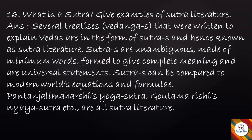Question: What is a Sutra? Give examples of Sutra literature. Answer: Several treatises, known as Vedangas, written to explain the Vedas are in the form of Sutras and hence known as Sutra literature. Sutras are unambiguous, made of minimum words, formed to give complete meaning, and are universal statements. Sutras can be compared to modern equations and formulas. Examples include Patanjali Maharishi's Yoga Sutra and Gautama Rishi's Nyaya Sutra.